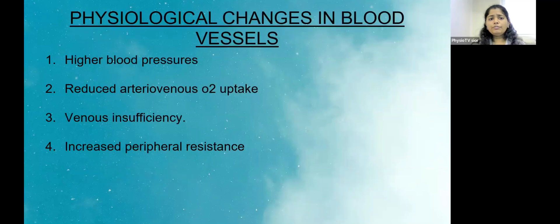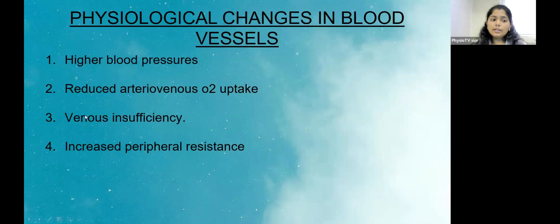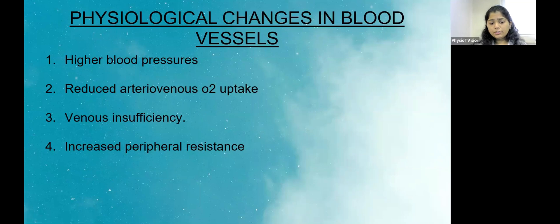Physiological changes in blood vessels include higher blood pressure, reduced arteriovenous oxygen uptake, venous insufficiency occurring with aging, and increased peripheral resistance. We will be looking at the reasons for these changes ahead.